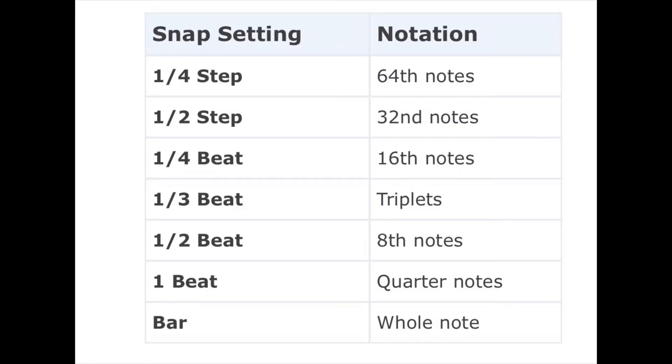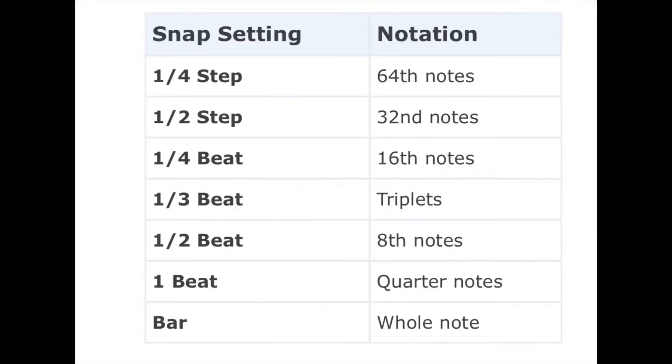Here are the snap values: a quarter step equals a 64th note, a half step equals a 32nd note, a quarter beat equals a 16th note, a third beat equals a 16th triplet, a half beat equals an eighth note, one beat equals a quarter note, and a whole bar equals a whole note.